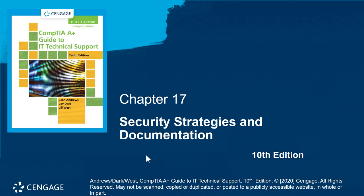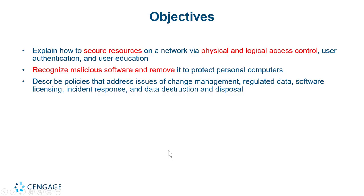Chapter 17 is about security strategies and documentation, for the 10th edition. The objectives for this chapter are to explain how to secure resources on the network — both physical and logical — in other words how we do it via software, but there are physical considerations that have to do with securing access to data and servers.